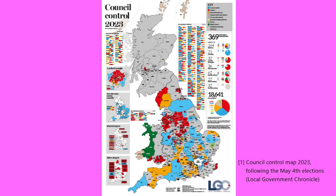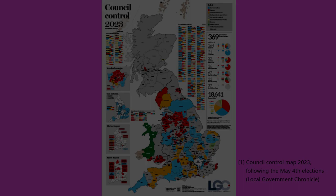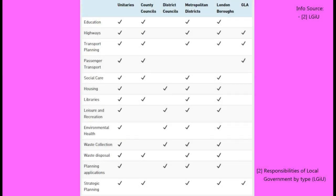To start, let's clarify what local government does in England, since the term gets bandied about a lot but never really explained. There are 318 local councils in England, which are split up into different categories, each with their own set of legal responsibilities.